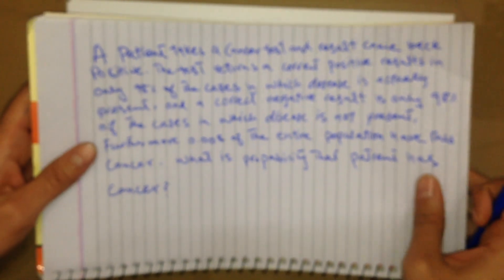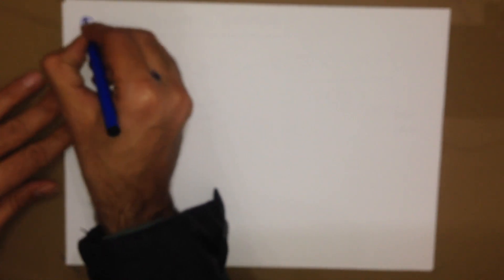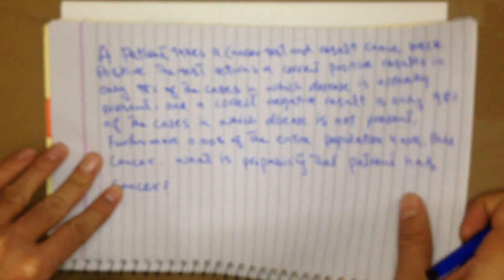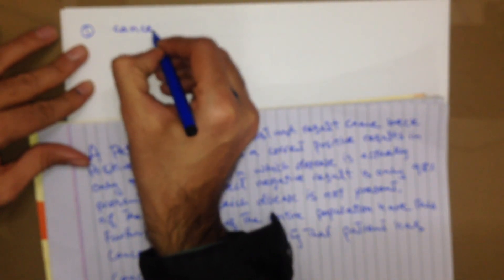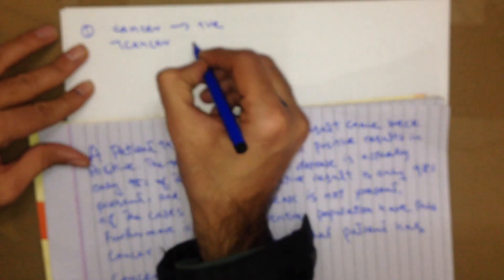To solve this we need P(H), P(D|H), and P(D). Let's figure them out step by step. Step one: identify the classes. There are two classes — the patient has cancer and the patient doesn't have cancer. If the patient has cancer it is a positive class, and if the patient doesn't have cancer it is a negative class.